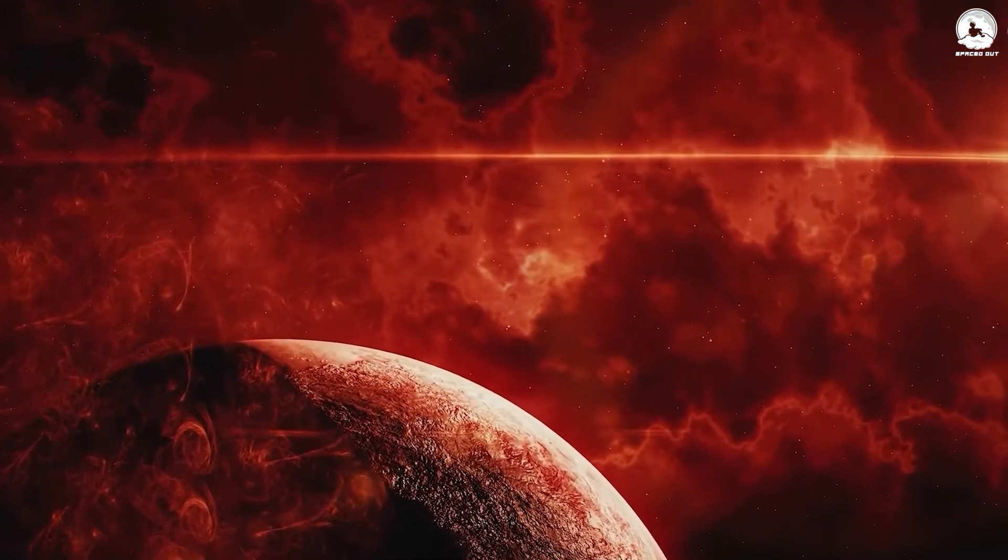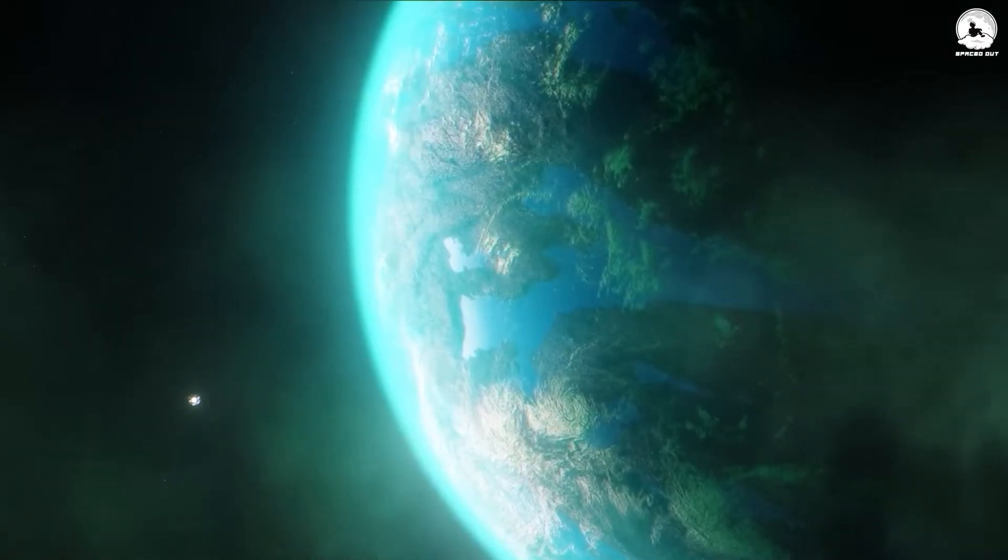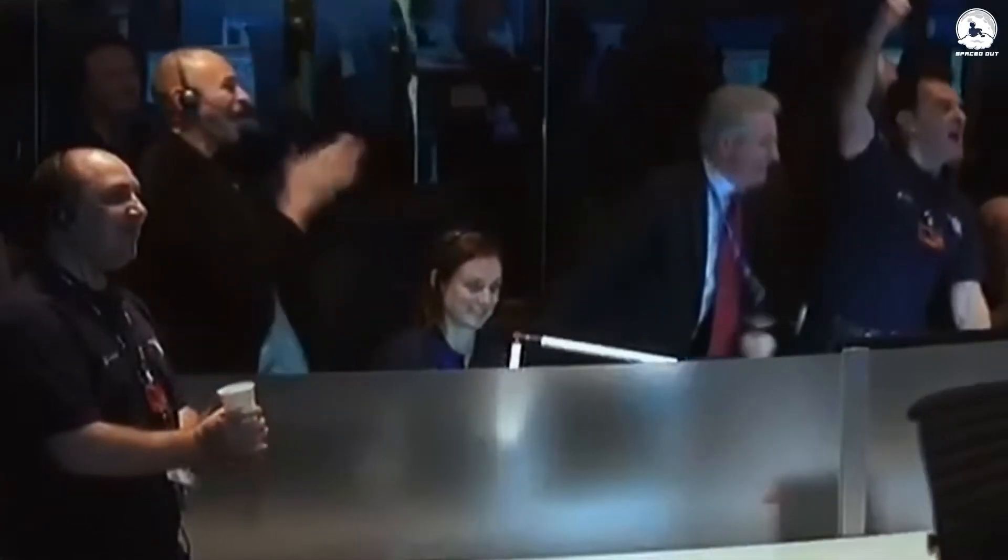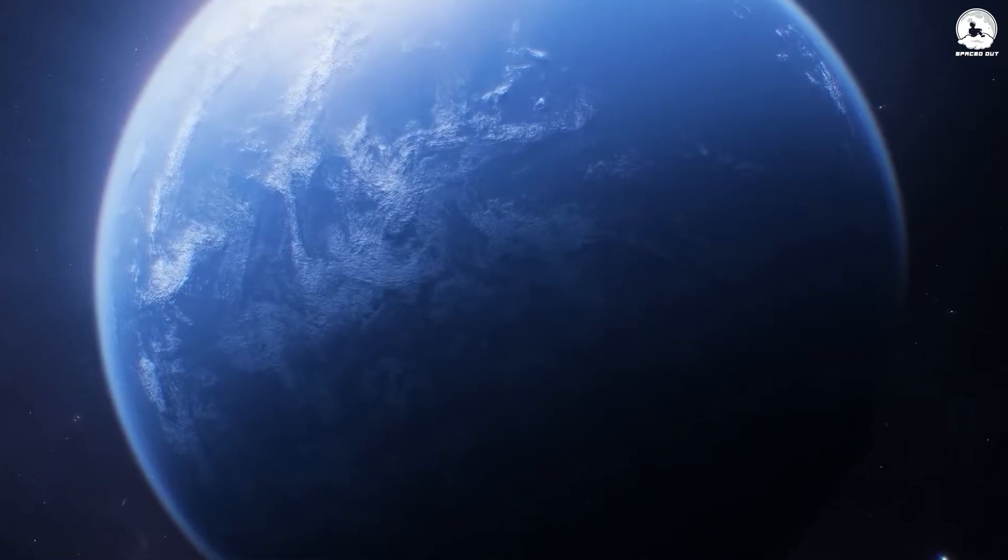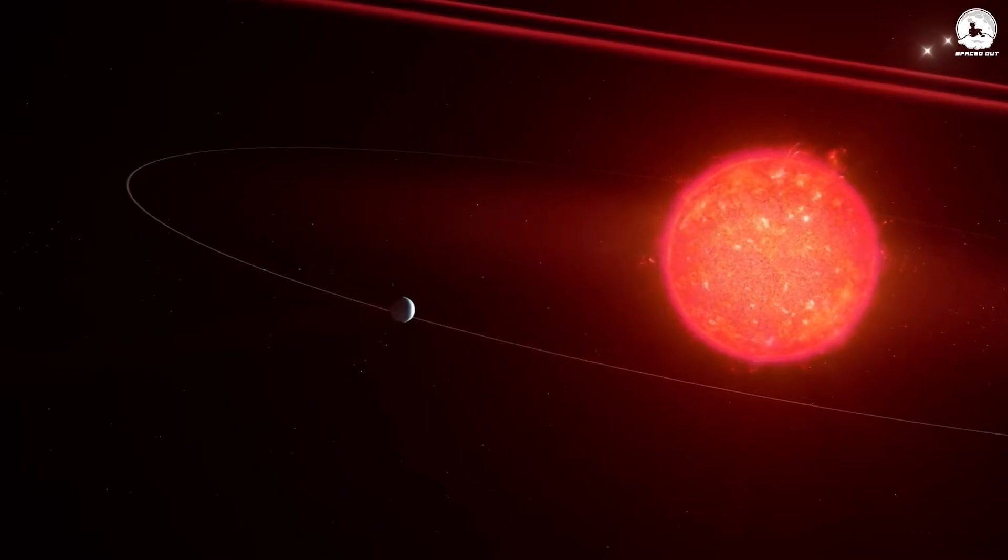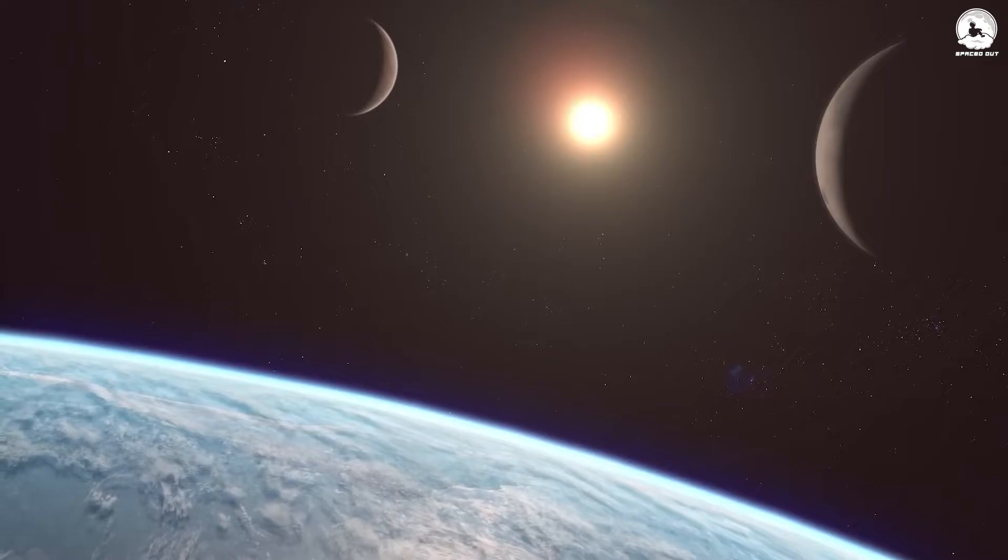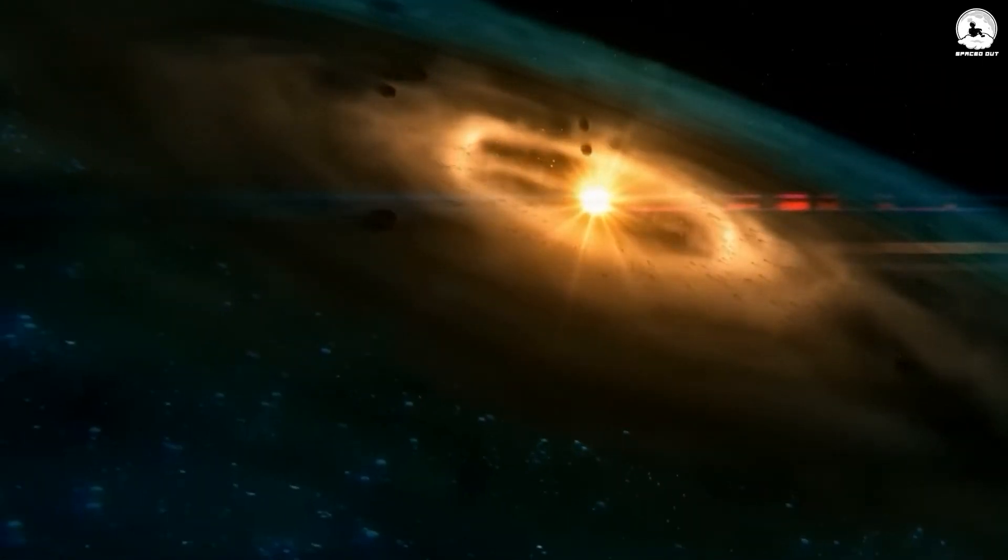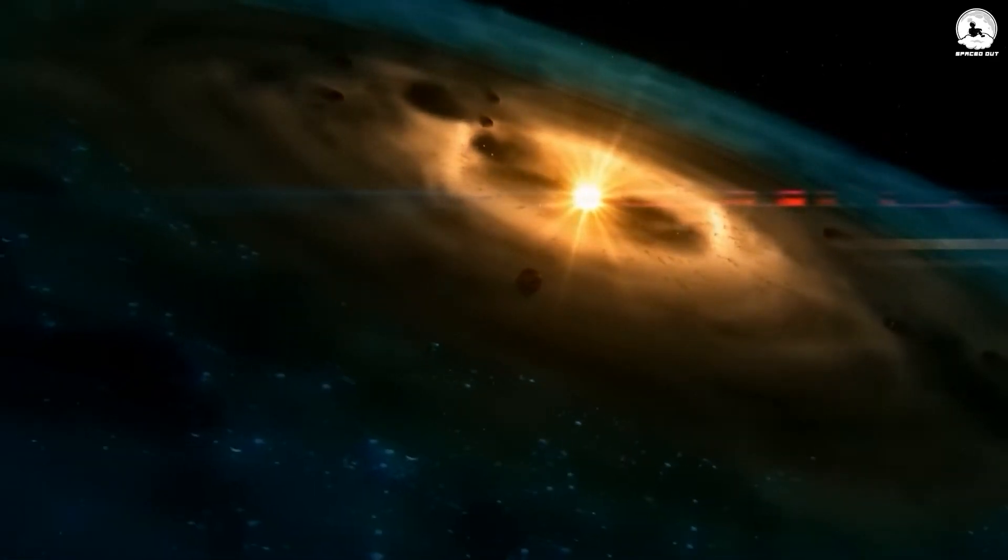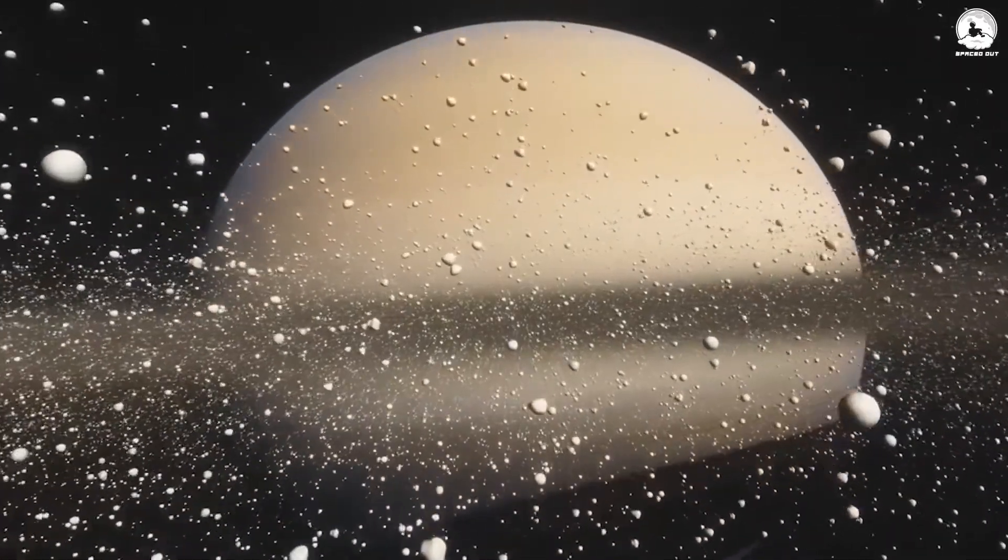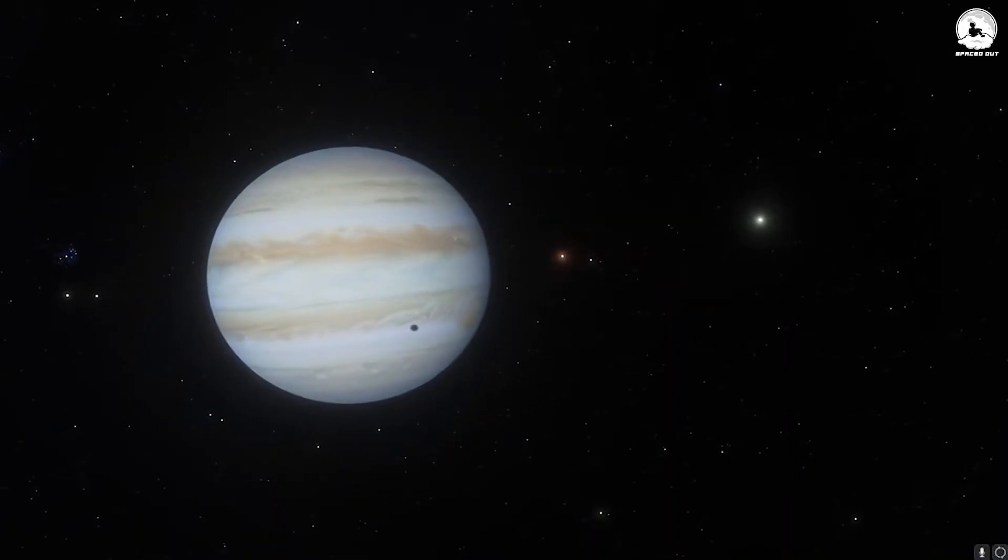However, AB Aurigae b, impressive as it is, does not hold the title for the largest exoplanet. In 2005, astronomers made a noteworthy discovery, identifying a celestial body later named GQ Lupi b. This mysterious object was found in orbit around a young star, positioned at a distance two and a half times greater than the expanse between the Sun and Pluto. Scientists grappled with classifying GQ Lupi b, ultimately considering it to be either a planet or a brown dwarf, a miniature star. Should astronomers categorize it as a planet, it would claim the record as the largest ever discovered, boasting a radius three and a half times that of Jupiter.